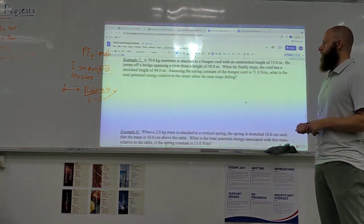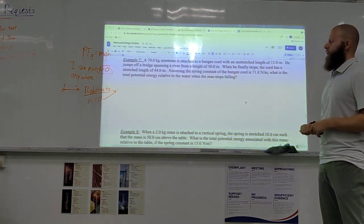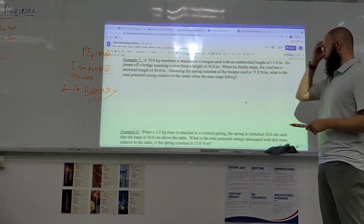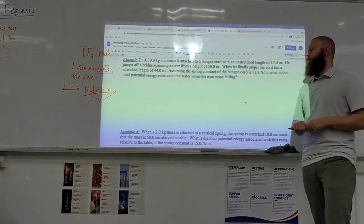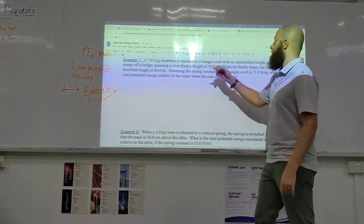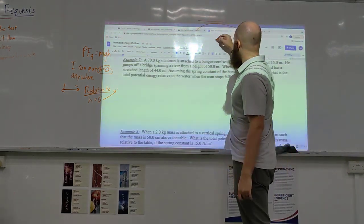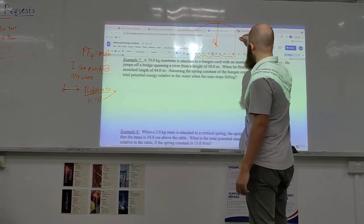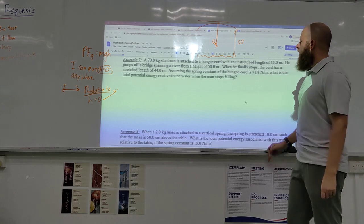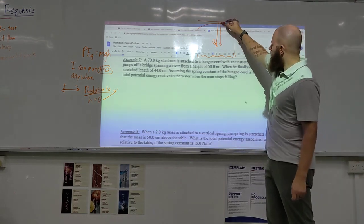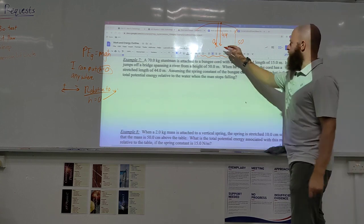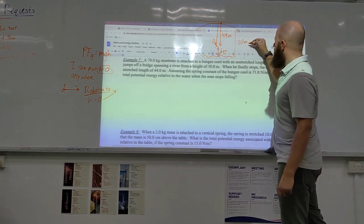So, we have a 70 kg stuntman is attached to a bungee cord with an unstretched length of 15 meters. He jumps off a bridge spanning a river from a height of 50 meters. When he finally comes to a stop, the cord has a stretched length of 44 meters. Assuming the spring constant of the bungee cord is 71.83, what is the total potential energy relative to the water when the man stops falling? So, let's first of all just draw a picture just to help visualize this. So, I've got a bridge, so this is the guy, so he'll be here, and then he's attached here. Now, the water is here, so this distance here is 50, correct? It's from a height of 50. But, his, this distance here is only what? Yeah, that distance is just 44. So, this distance is actually 6 meters.